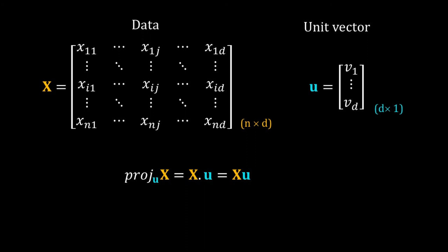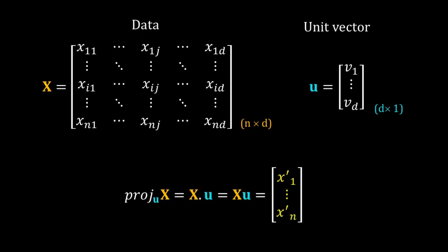The projection of X on u is obtained by the dot product of X and u. Both X and u have the right dimensions. I do not have to take much trouble. A simple multiplication of X and u will give me the dot product. That multiplication gives me a vector with n elements. This vector is the projected data. The entries of these vectors are the new positions of n samples on the span of this unit vector u.